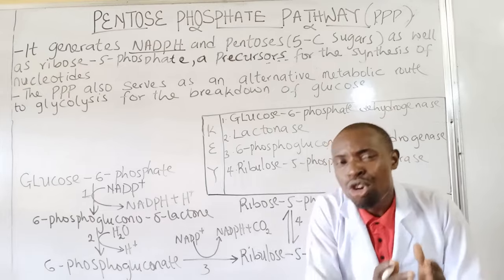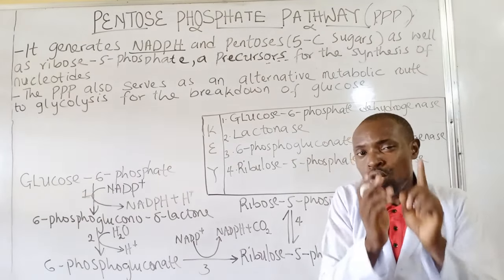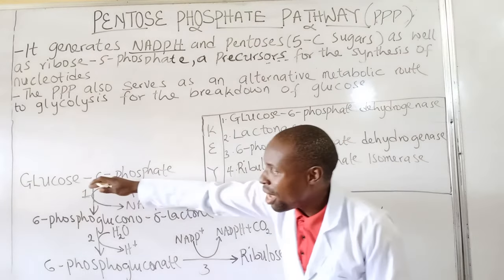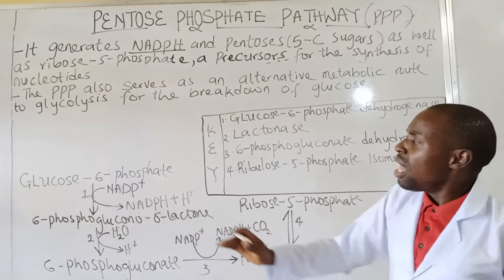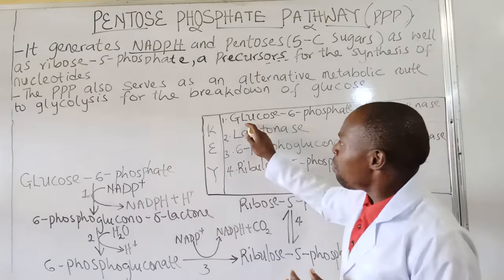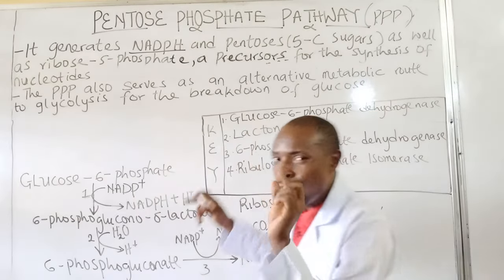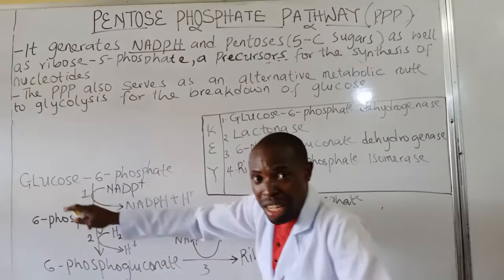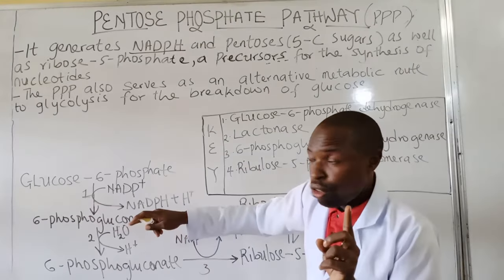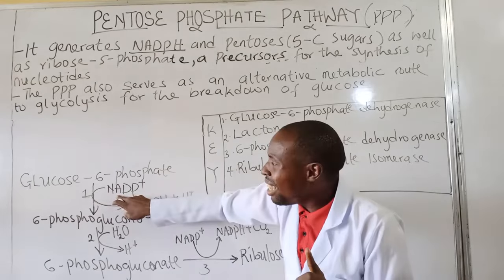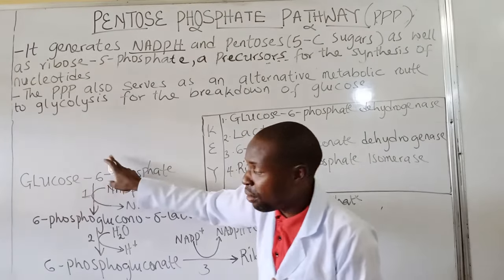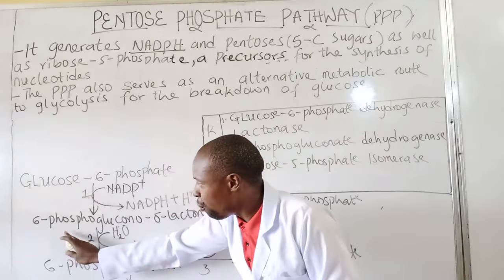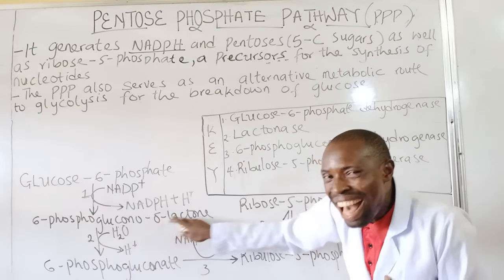Now the pathway is analyzed as follows. The first enzyme, which is glucose-6-phosphate dehydrogenase, will catalyze the transfer of a hydride ion to unorganized NADP+ with glucose-6-phosphate, producing NADPH and a proton, and also 6-phosphogluconodelta-lactone.